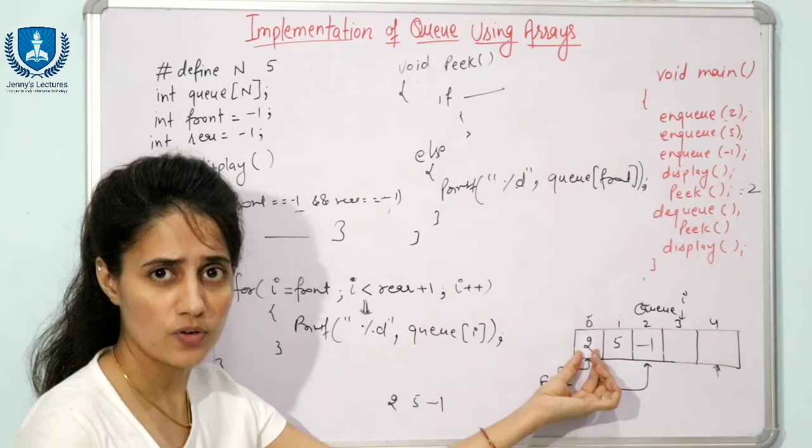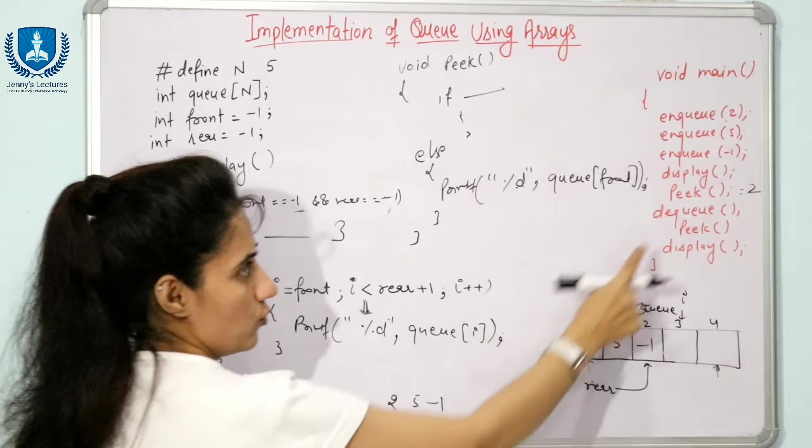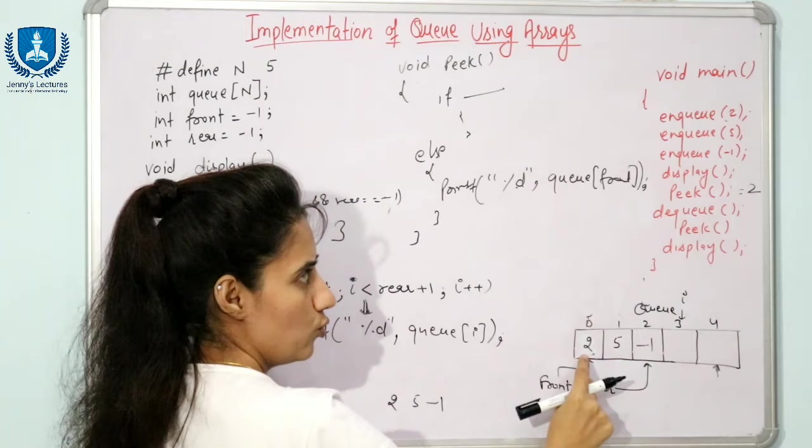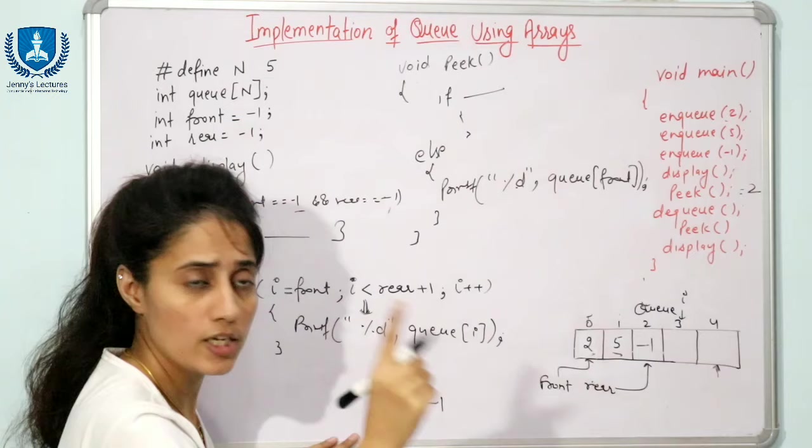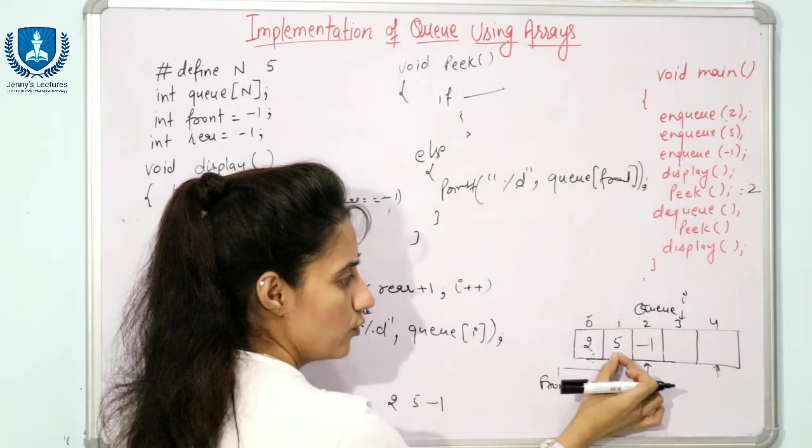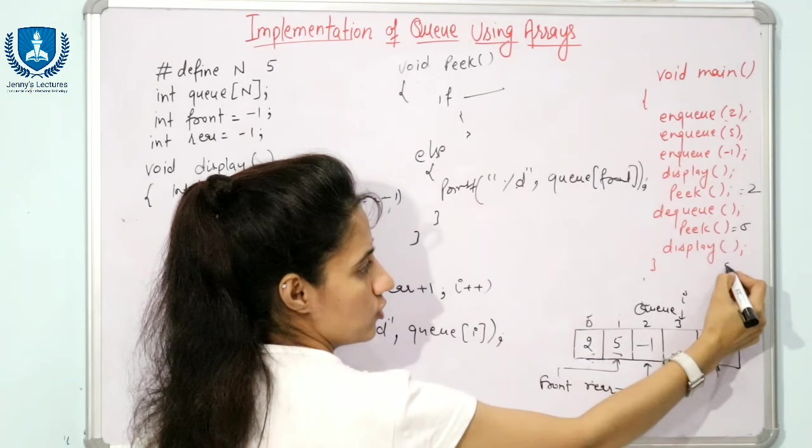The display function shows 2, 5, -1. After one dequeue, it prints 2. Then peek prints 5, because front has moved to index 1. The display function then shows 5 and -1.